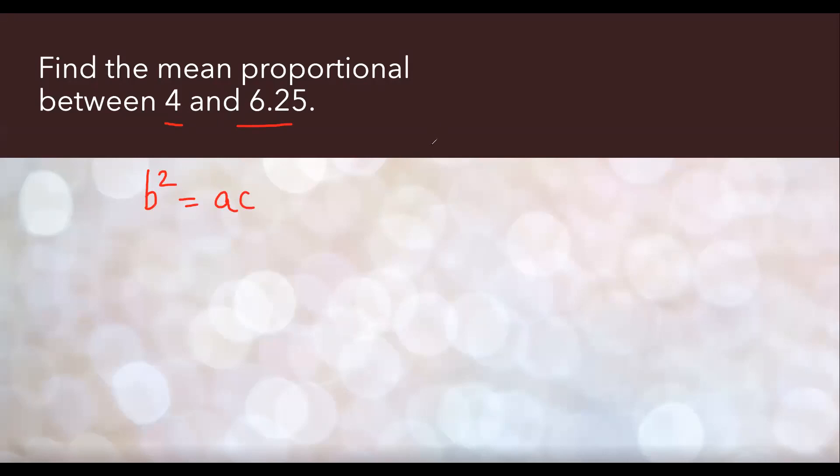From where does this come? Proportion is a is to b proportionate to c is to d, but here only two terms are given to us, 4 and 6.25. So in place of a, I'm gonna write down 4. In place of d, I'm gonna write down 6.25. Which means we don't have b and c term. In this case, we assume b and c is a mean proportionate, and we assume it's the same. So here we write b proportionate to b.